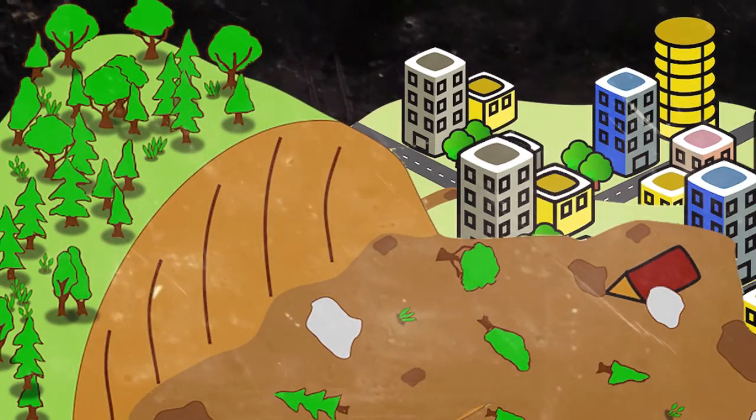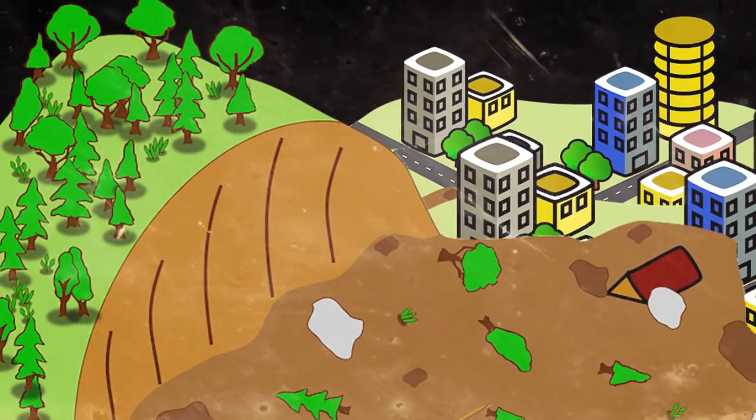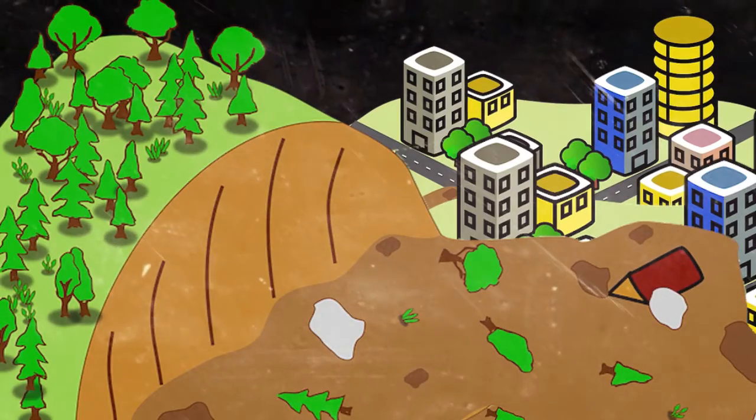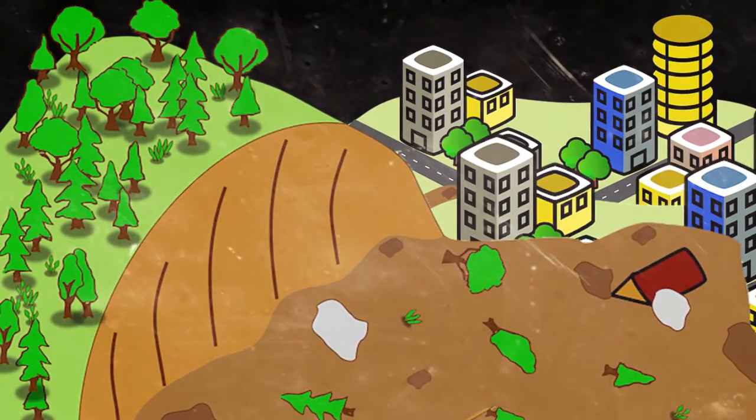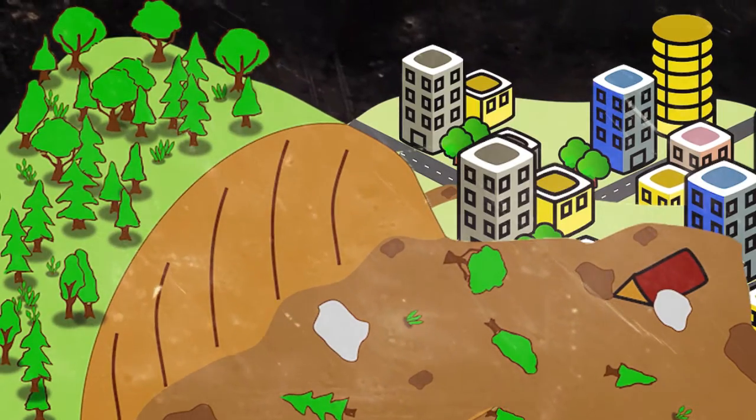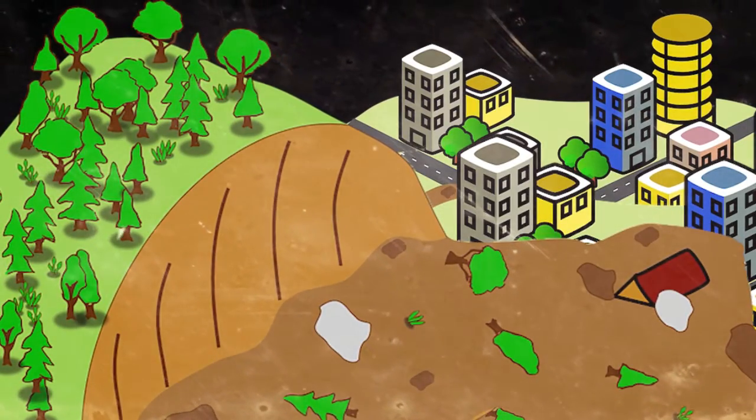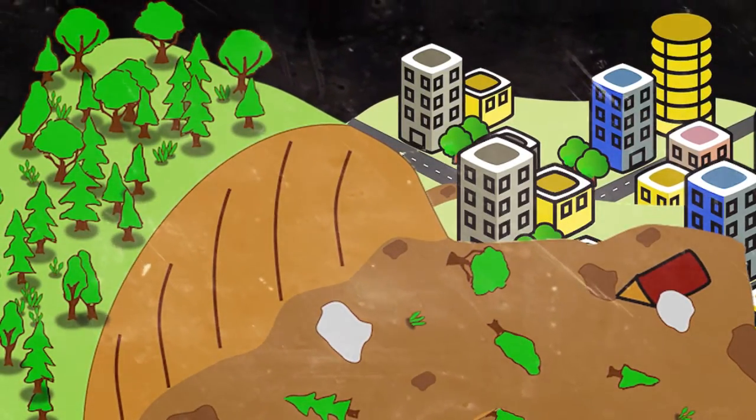Flood watch indicates the possibility of a river overflowing in the watch region. Flash flood watch indicates the possibility of flash floods in or around the watch area. Flood warning indicates that flooding is occurring in the warning area. Flash flood warning indicates that the warning region is experiencing flash floods.